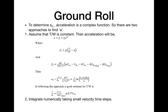Acceleration is a complex function and a major variable in ground roll distance. There are two possible approaches to evaluate it: first, assume that the thrust-to-weight ratio T/W is constant; second, integrate numerically taking small velocity time steps.